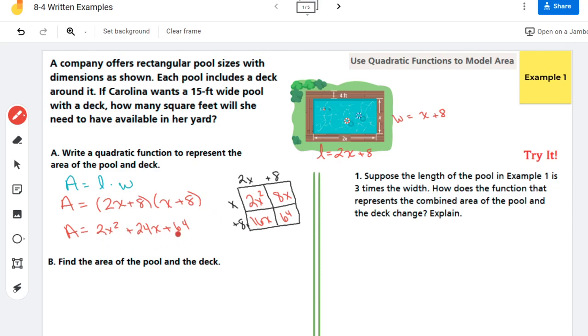And so what's nice about having an expression here like this is I can, you know, if Carolina is one of those wishy-washy people who isn't sure on what size she wants, or if her backyard's not big enough, she can quickly figure out a different area. So now we want to actually find the area of the pool and the deck. So we're going to try the 15 feet.